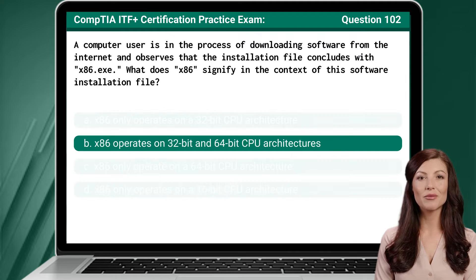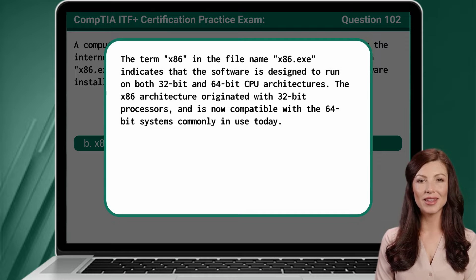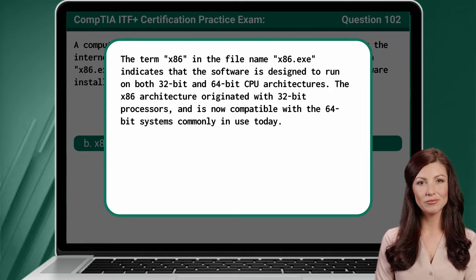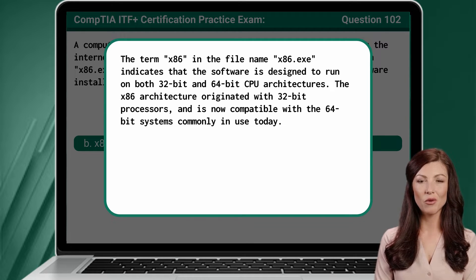The answer is B — x86 operates on 32-bit and 64-bit CPU architectures. The term x86 in the file name x86.exe indicates that the software is designed to run on both 32-bit and 64-bit CPU architectures. The x86 architecture originated with 32-bit processors and is now compatible with the 64-bit systems commonly in use today.